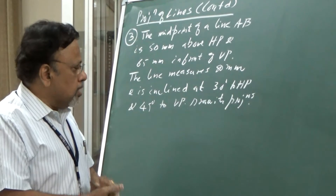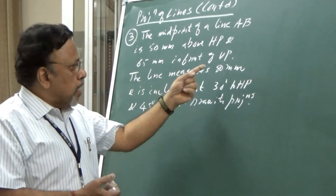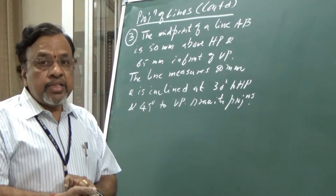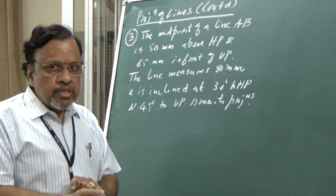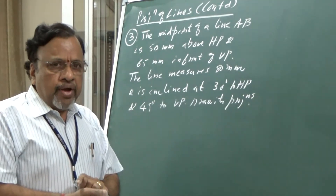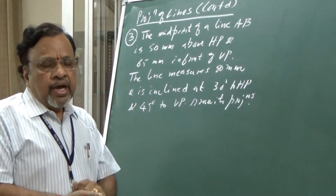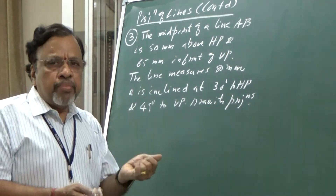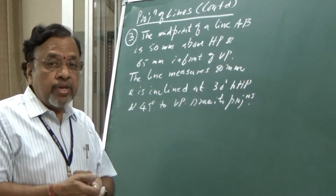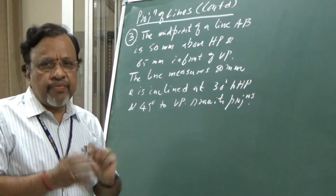If we observe this particular problem, all of you have done this — given the true length and true inclinations, we have already done similar problems. But in those problems, I would have specified one of the ends — end A or end B. But here, instead of giving an end point, the midpoint is given. That is the only difference.